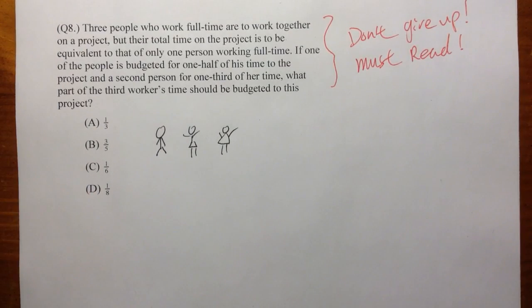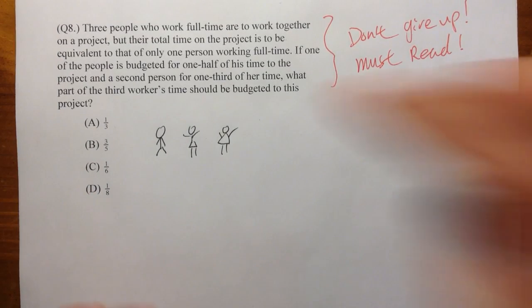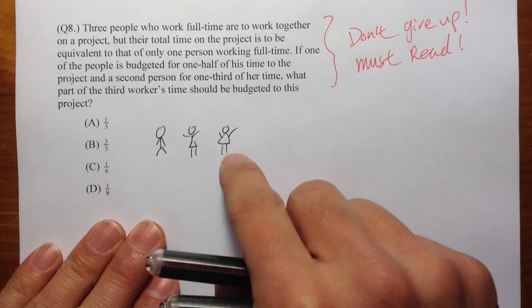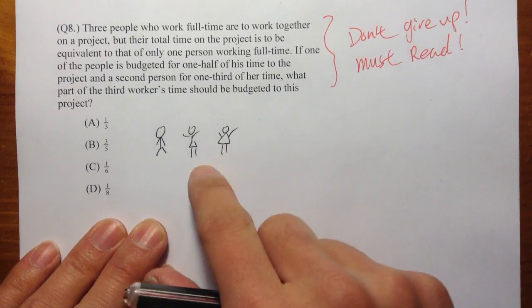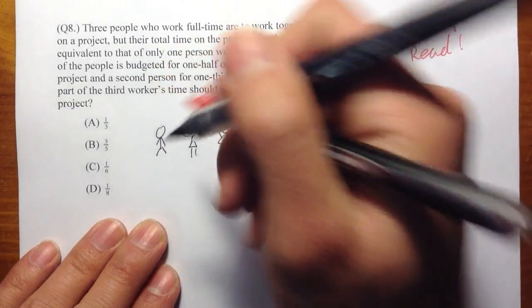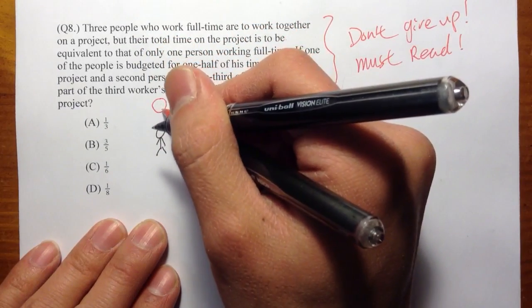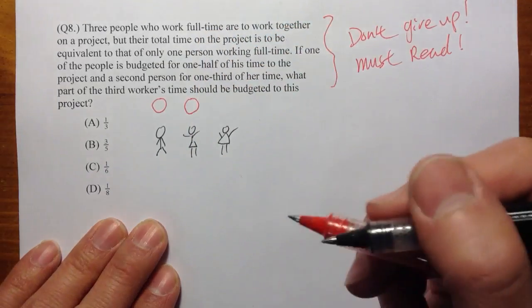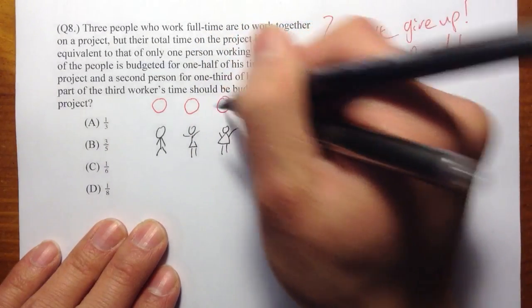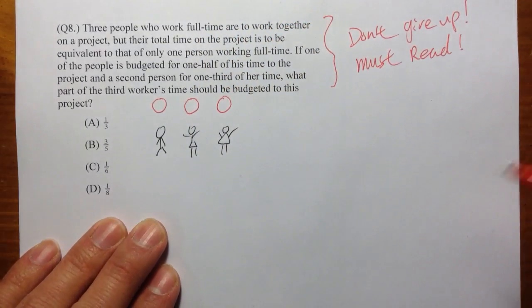So you can think about this like the deal is like this. Originally, let's think about that. Originally, they all have a pizza to eat. This guy has a whole pizza to eat, and this person has a whole pizza to eat, and then this person has a whole pizza to eat.